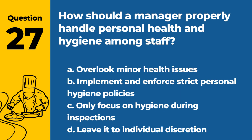Question 27. How should a manager properly handle personal health and hygiene among staff? A. Overlook minor health issues. B. Implement and enforce strict personal hygiene policies. C. Only focus on hygiene during inspections. D. Leave it to individual discretion. Answer: B. Proper handling of staff health and hygiene involves setting and enforcing strict policies to maintain food safety.